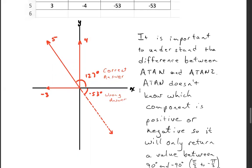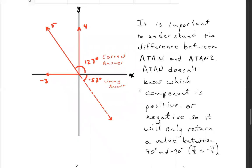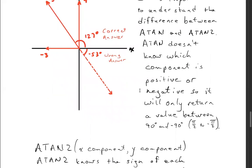Look at the difference here: 53, 127 degrees, minus 127 degrees, and minus 53 degrees. It's important to understand the difference between ATAN and ATAN2. ATAN doesn't know which component is positive or negative, so it will only return a value between 90 and minus 90, or pi over 2 to minus pi over 2.